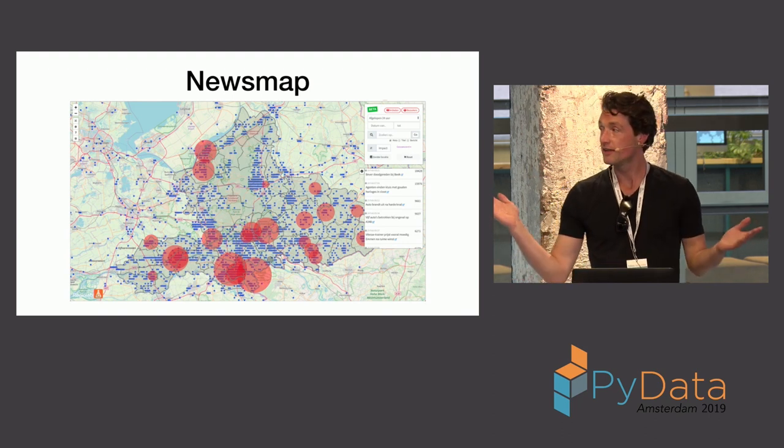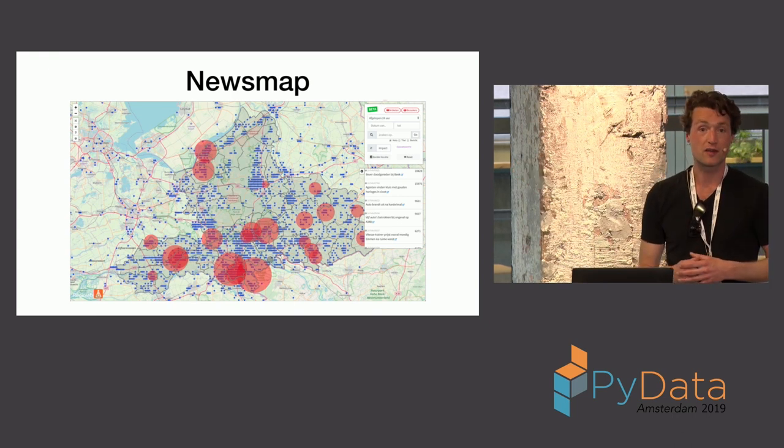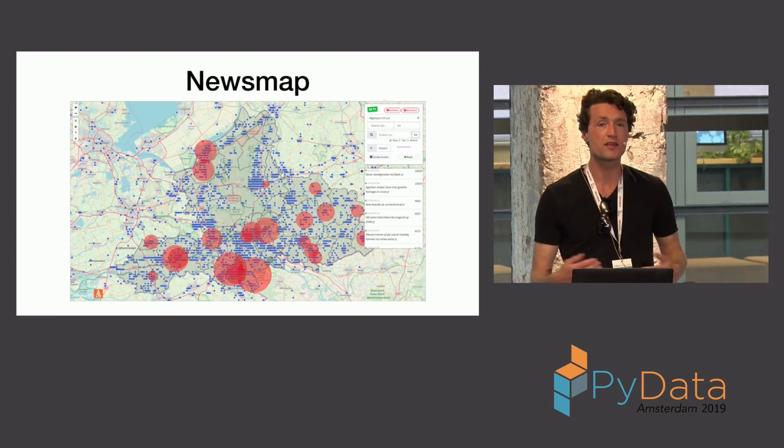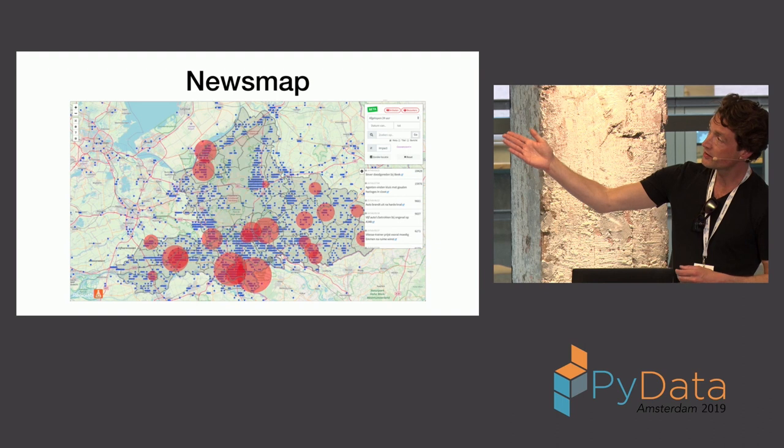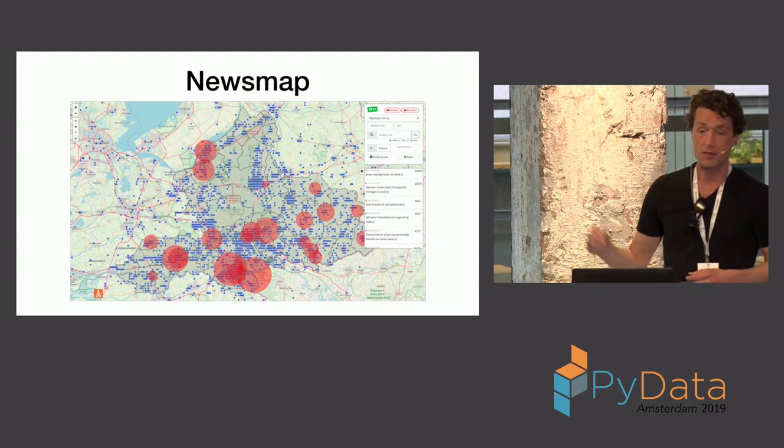And, yeah, the idea is, like, in this example, you immediately see that there is a blind spot. So, there are whole regions of the province that are not being covered. So, you can immediately see that you can make more relevant content by writing something about that region.